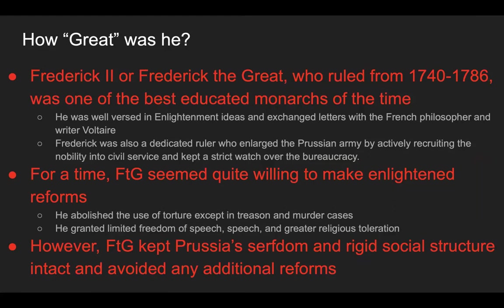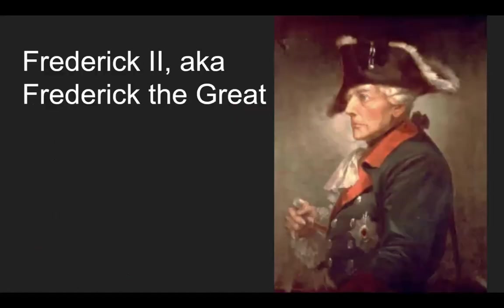For a time, Frederick the Great seemed quite willing to make enlightened reforms. He abolished the use of torture except in treason and murder cases, granted limited freedom of speech, and established greater religious toleration. However, Frederick the Great kept Prussia's serfdom and rigid social structure intact and avoided any additional reforms. Serfdom is essentially the European version of slavery.